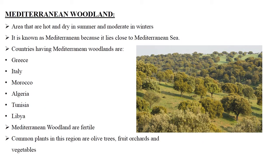Mediterranean woodlands are areas that are hot and dry in summer and have moderate winters. This region is known as Mediterranean as it lies close to the Mediterranean Sea. Greece, Italy, Morocco, Algeria, and Libya are some countries that have Mediterranean woodland.